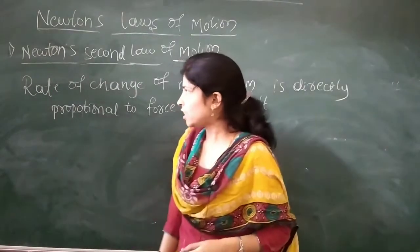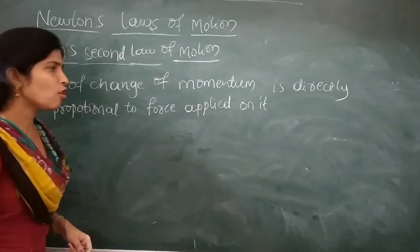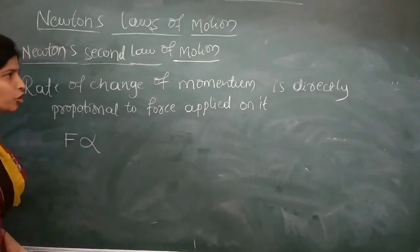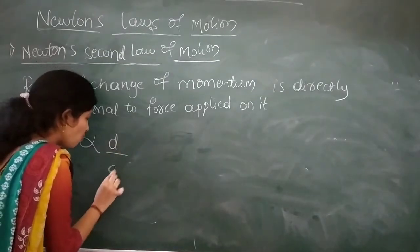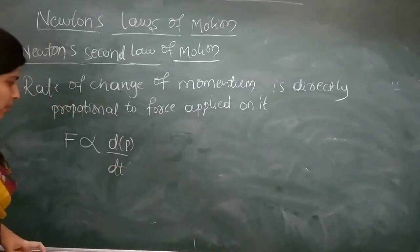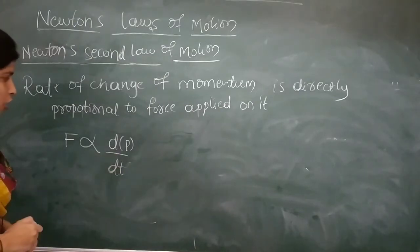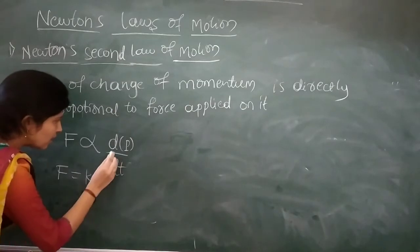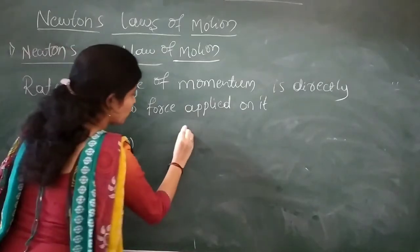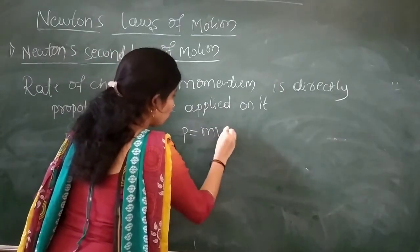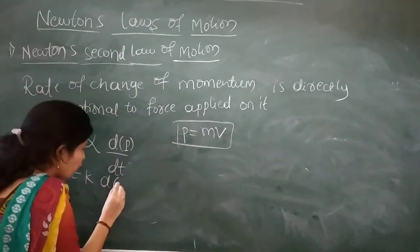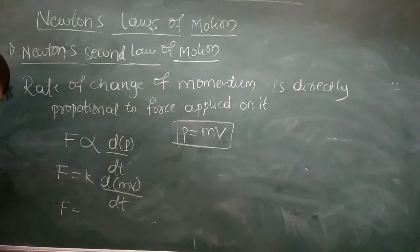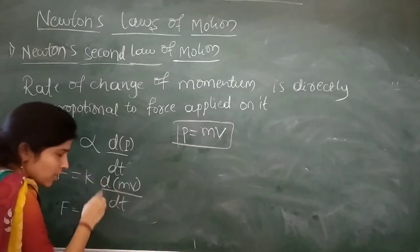Newton's second law of motion says that the rate of change of momentum is directly proportional to the applied force. This force is directly proportional to the rate of change of momentum. So force F equals k times d(mv)/dt, where k is the proportionality constant.